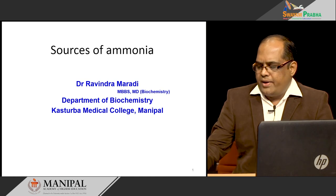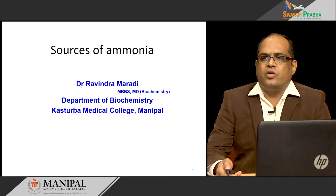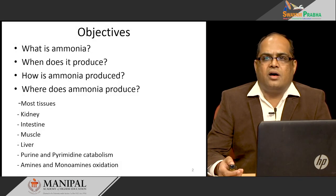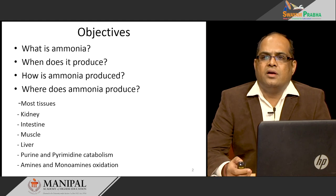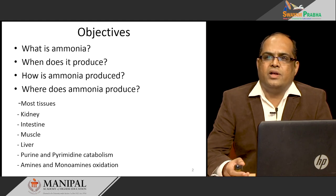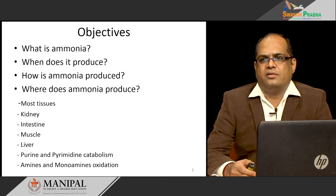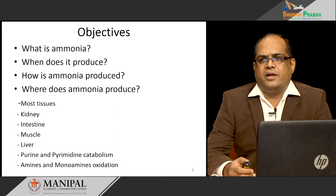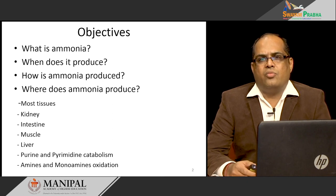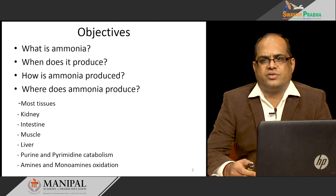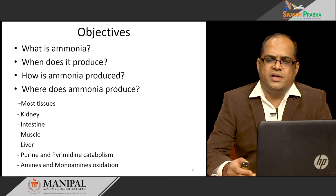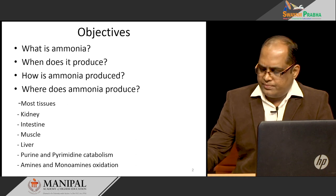The topics which I am going to discuss are under the following headings. First, we will see what is ammonia, then when does it produce, how ammonia is produced, and where it is produced. Ammonia is produced in different tissues, and we will see in different tissues how it is produced.